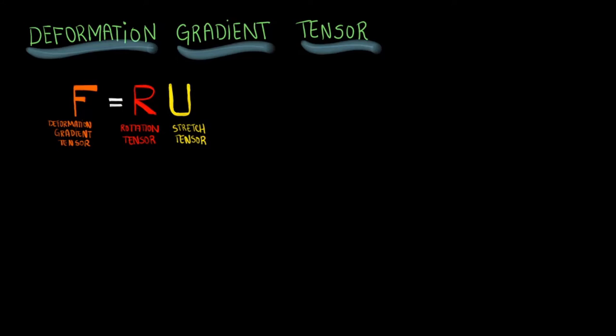We can use components from the stretch tensor U acquired from the deformation gradient tensor to obtain strain values. That is, R must first be removed from F before you can break down any strains that may have occurred in the body.